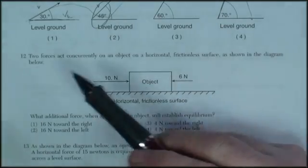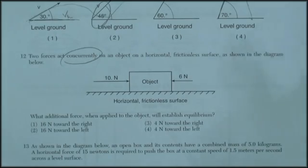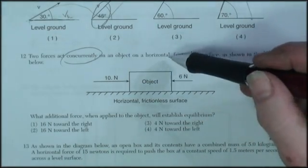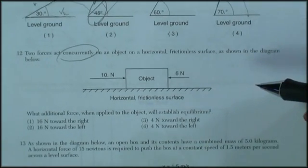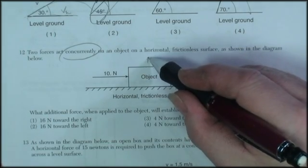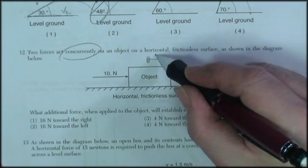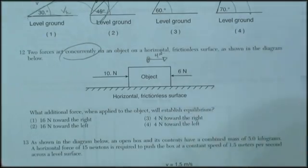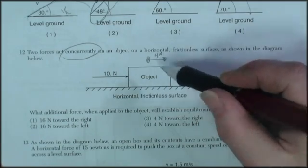Question 12. Two forces act concurrently—the word concurrently means at the same time—on an object on a horizontal frictionless surface, as shown in the diagram below. Let's look at the picture. We've got an object, 6 Newtons there, 10 Newtons there, a net force of 4 Newtons in this direction. Just a simple tug-of-war type of calculation. And if it's frictionless, it will begin to accelerate in this direction because there is a net force.